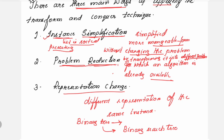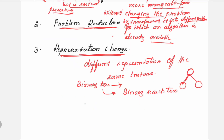In the binary search tree, you organize the elements in a proper order. All elements placed towards the left side of the root or parent node are lesser, and elements placed towards the right side are greater. This way you change the representation — this transformation from a set to a binary search tree is an example of the representation change technique.